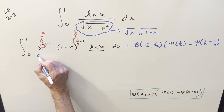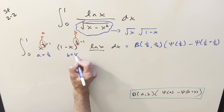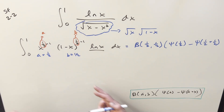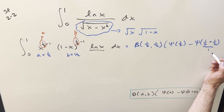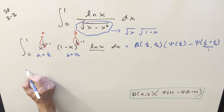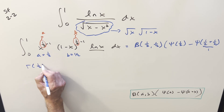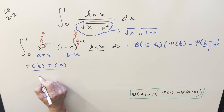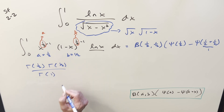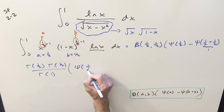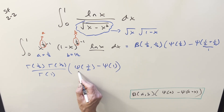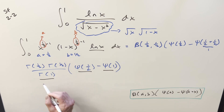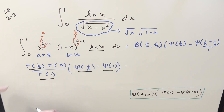Using our formula with a equals one half and b equals one half — that sum is just one — let's evaluate. The beta function here is gamma of one half times gamma of one half over gamma of one. Then we have digamma of one half minus digamma of one. Gamma of one half has the well-known value of square root of pi, so multiplying two of them gives pi. Gamma of one equals zero factorial, which is just one, so we can ignore that denominator.